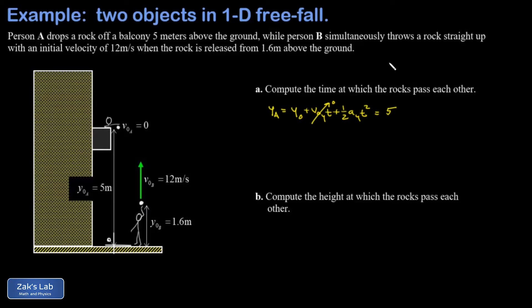rock is in free fall, so the acceleration is negative g, or -9.8 m/s². To clean things up, the position of rock A as a function of time is yₐ(t) = 5 - 4.9t². Anytime you plug a t into that, you find out the location of this rock.